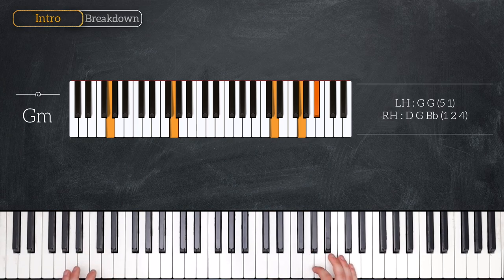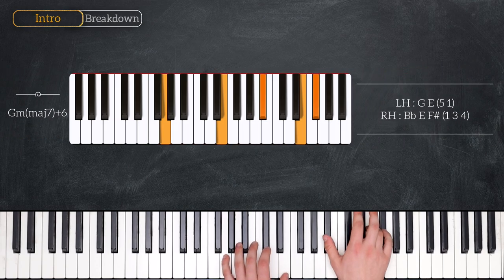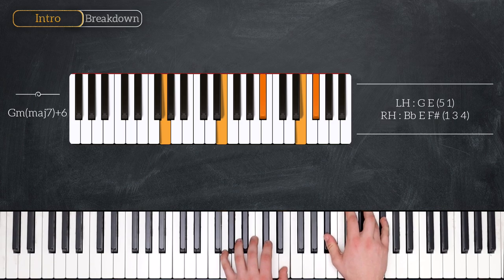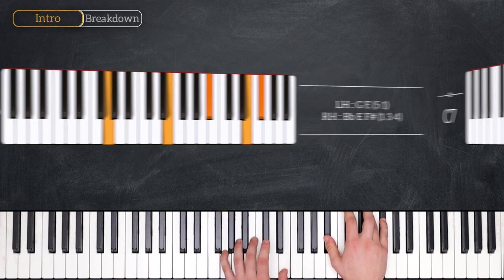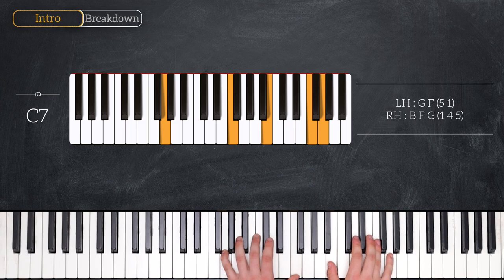Then we have this G minor major 7 add 6. G and E in the left hand. Bb, E, and F sharp in the right. Then we move to a G7. G and F in the left hand. B natural, F natural, and G in the right.